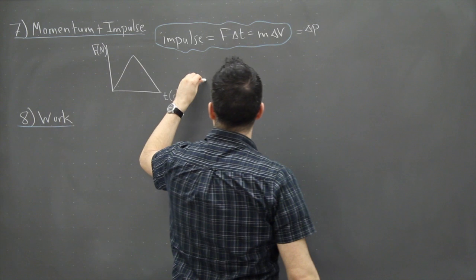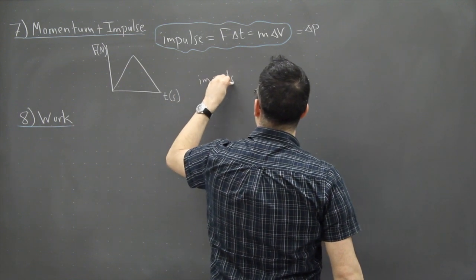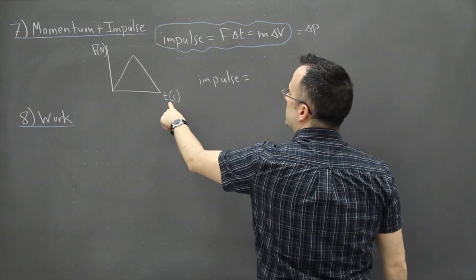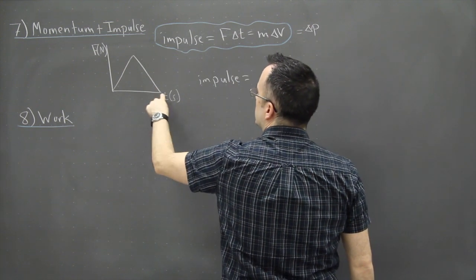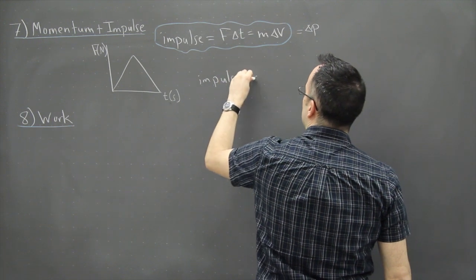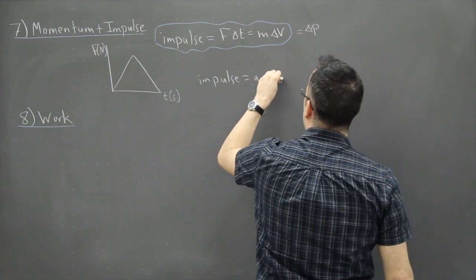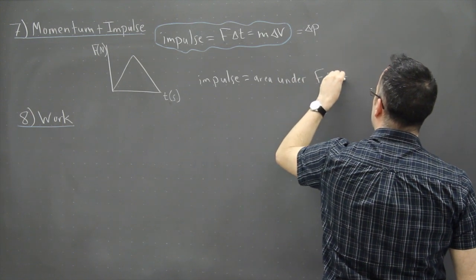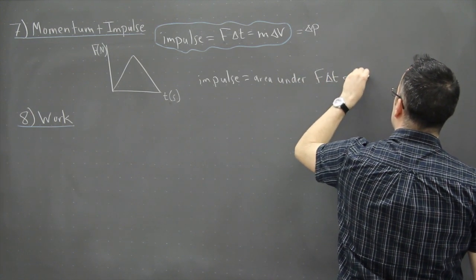Well the impulse then is, if you look at this carefully, this is F and this is delta T, this could be a change in time. So if it's F times delta T, that means we could say that the impulse is the area under an F delta T graph. That's the key thing here.